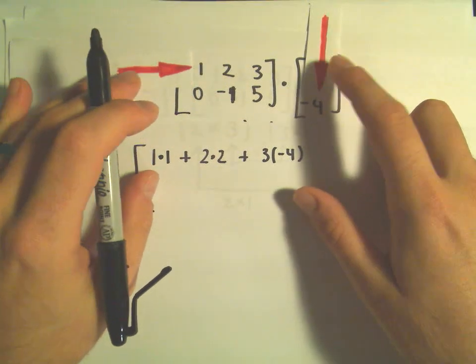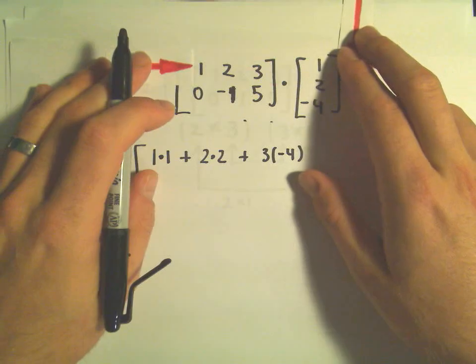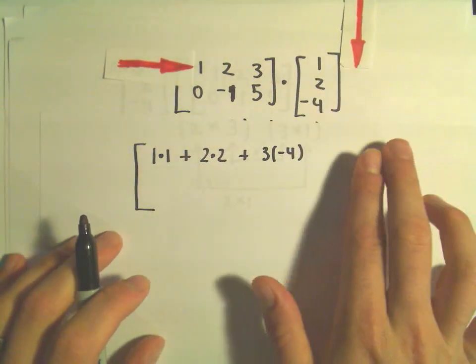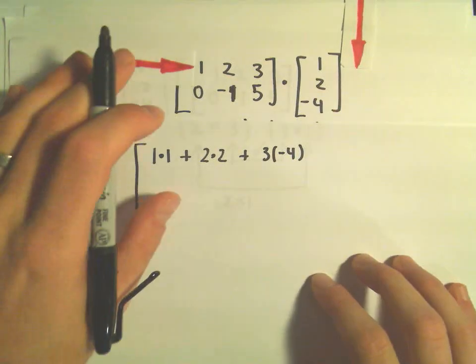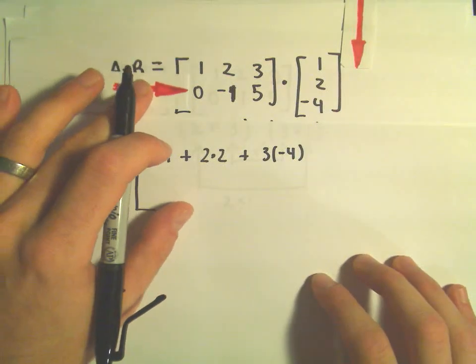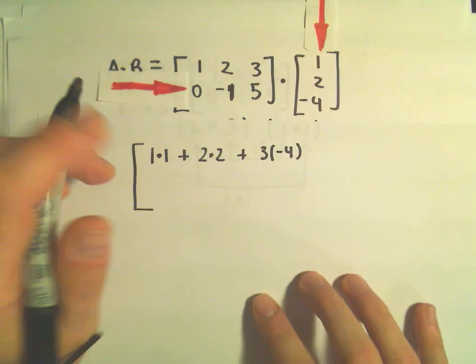If there were more columns, I would now just repeat. I would take the first row and multiply by the next column, and that would give me my next entry. But in this case, there's only one column.